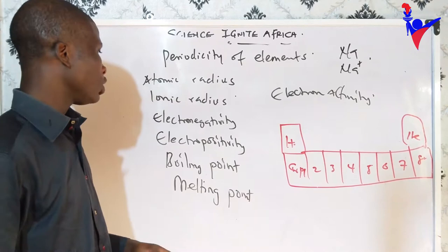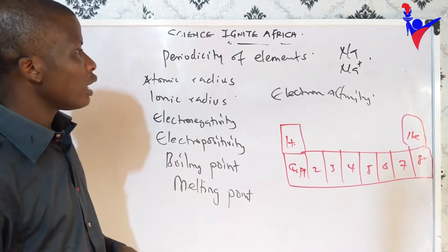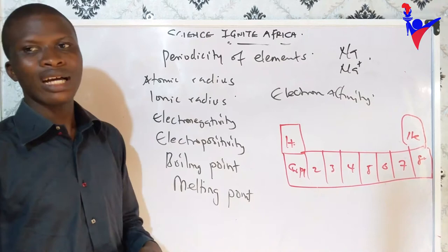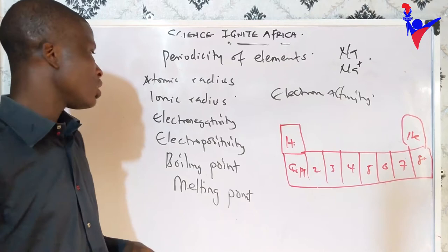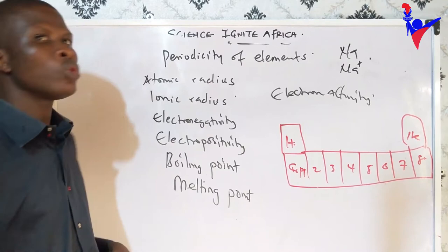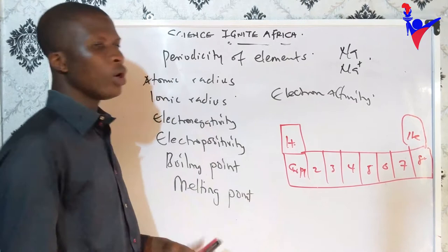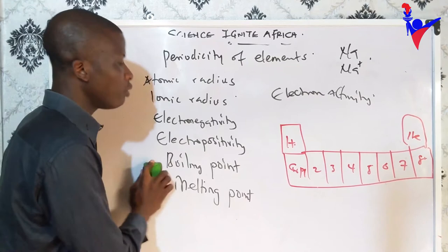Electronegativity is the power or tendency an atom has to attract electrons toward itself. Electropositivity is the tendency of an atom to lose an electron and become a positively charged ion. Electron affinity is the tendency of an atom to draw electrons toward itself. We also have boiling points and melting points as periodic properties.